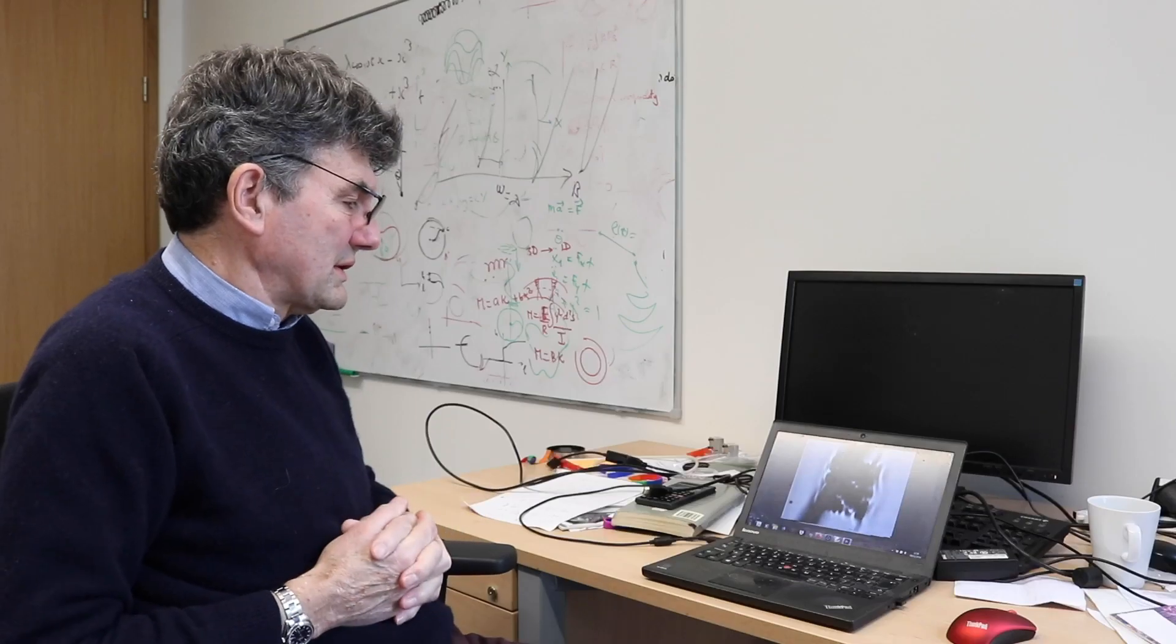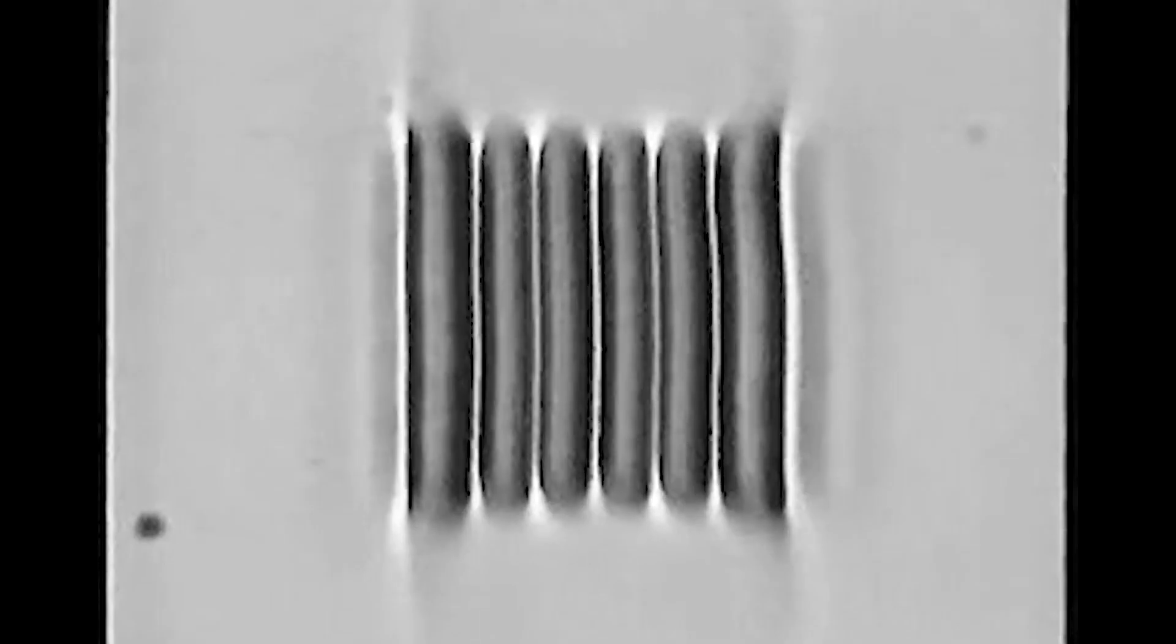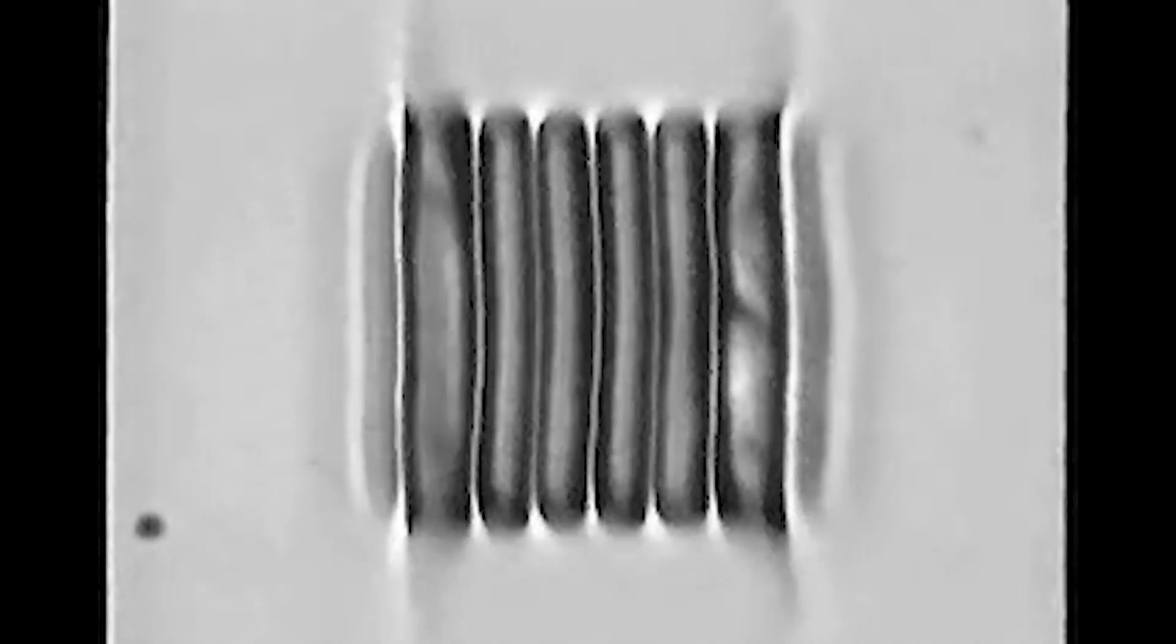There's a pixel on a liquid crystal display screen and we're increasing the voltage. As we increase the voltage, you see the onset of hydrodynamic instability. We see this nice roll structure in this direction.